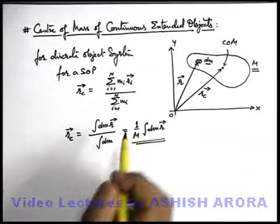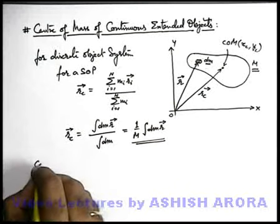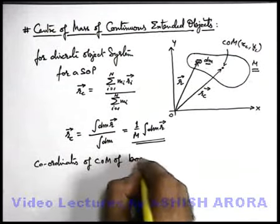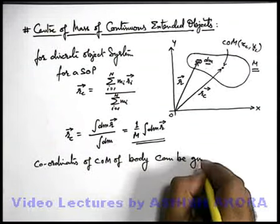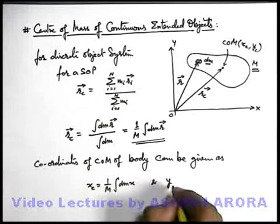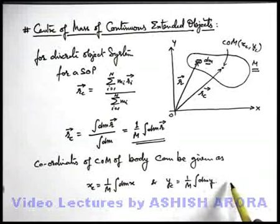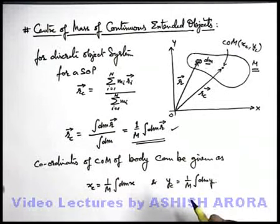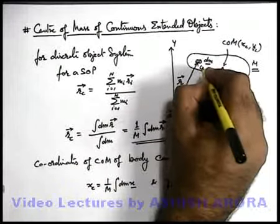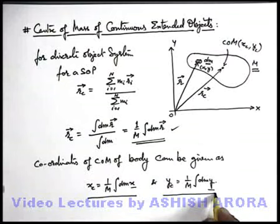Similarly, we can generalize this for the coordinates of center of mass. If the center of mass is located at coordinates x_c and y_c, the coordinates of center of mass of the body can be given as: x_c = (1/M) ∫ x dm, and y_c = (1/M) ∫ y dm. If it is a three-dimensional object, we can also define its z coordinate. Here x and y are the coordinates of the elemental mass dm. If it is located at coordinates x and y, we find x_c and y_c of center of mass using this relation.